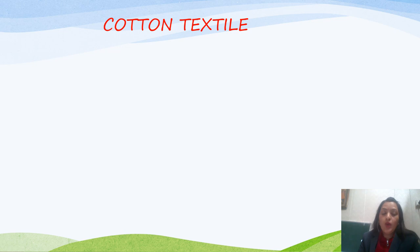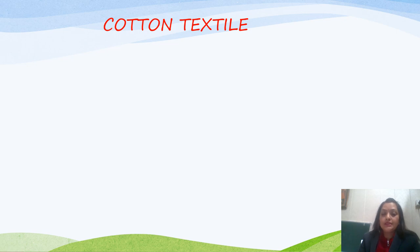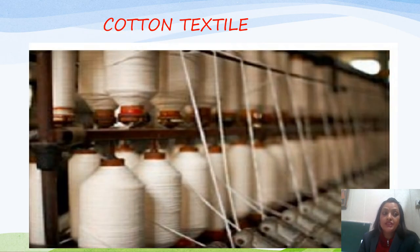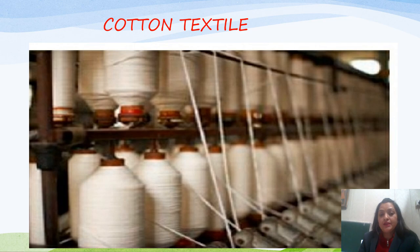The first agro-based industry is cotton textile. Cotton textile mills take cotton as a raw material and these mills are located mostly around Mumbai, Davad, Kolkata, Kanpur, Madurai, Bengaluru, Chennai, Coimbatore, Varanasi, and Panipat.